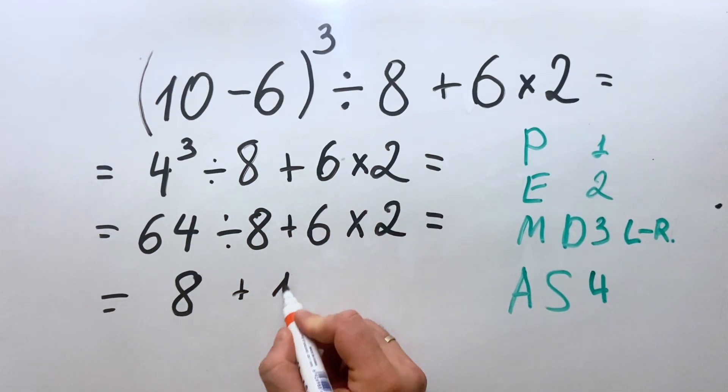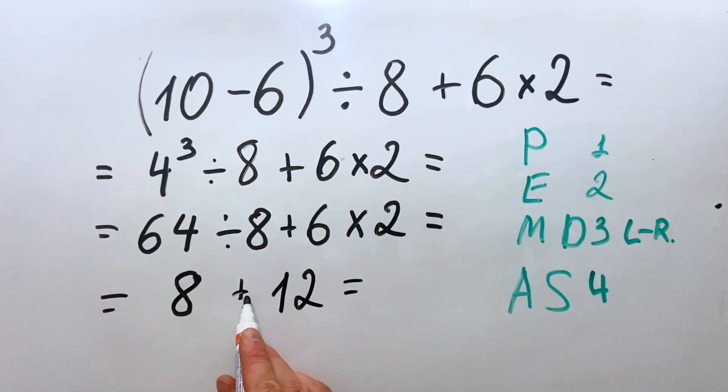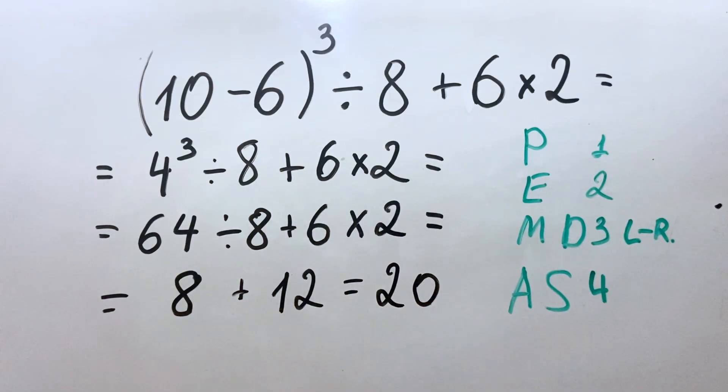So the last one, the fourth place, we do the addition. 8 plus 12 is 20.